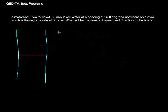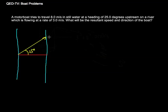I need to draw in a vector that represents 8 meters per second heading at 25 degrees upstream. So let's do our vectors in yellow. I'll draw in the vector at 25 degrees. And we know there's going to be another vector — the river is going to be going downstream at 3 meters per second. We add our vectors tail to head, so we're going to have a 3 meters per second vector added on.